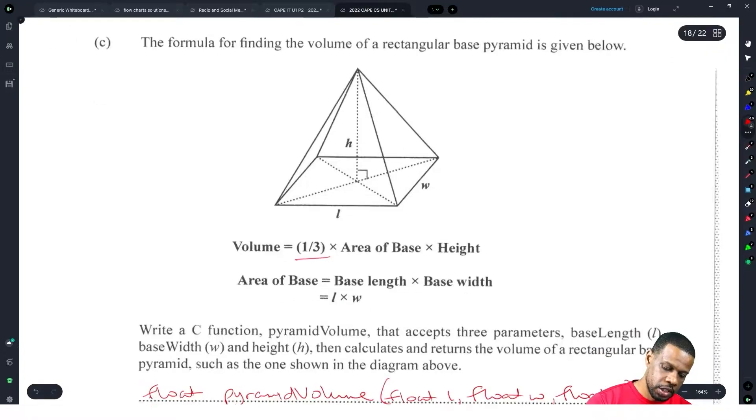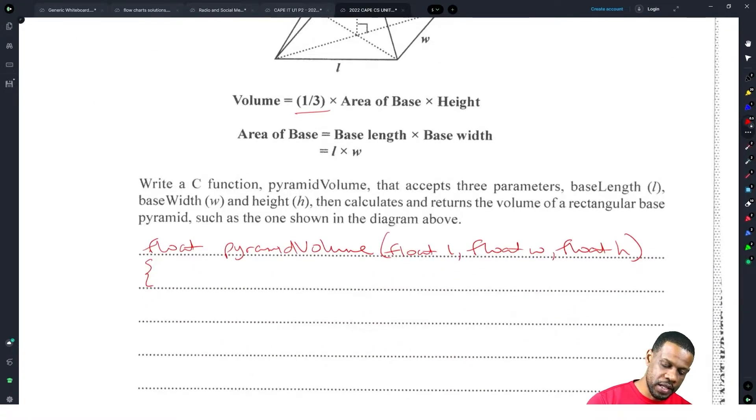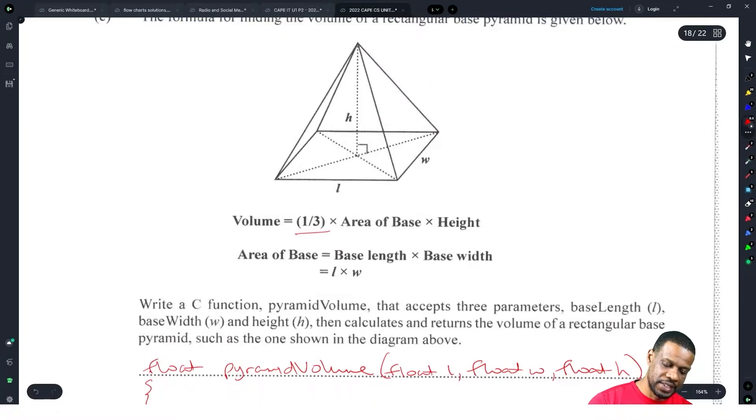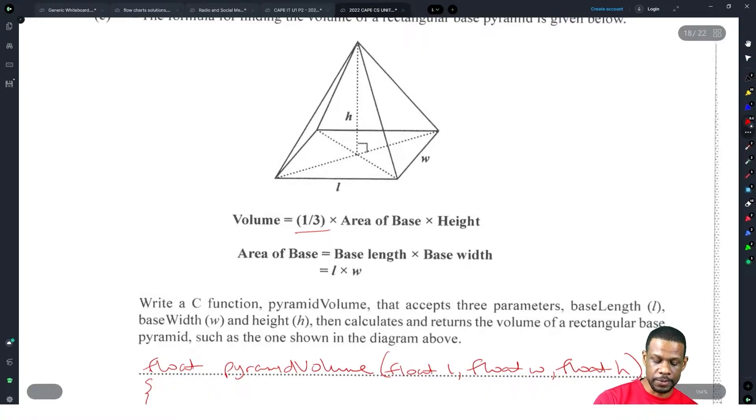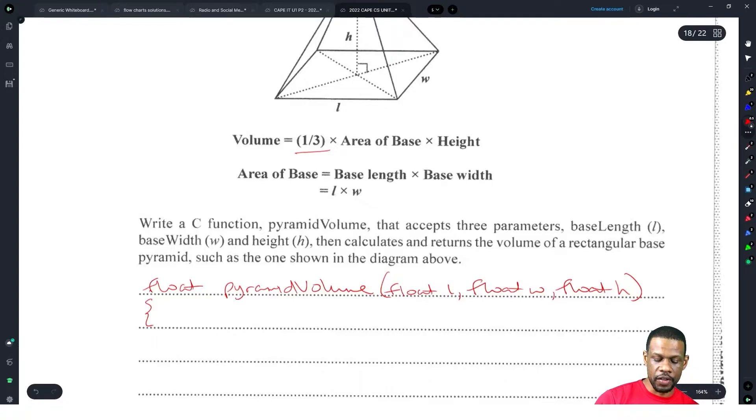The reason I put floats is because it's a shape. You could get three point something, two point something, five point something. You should be able to cater for decimals because they're finding a volume. I declare it as a float because it should return a float value.